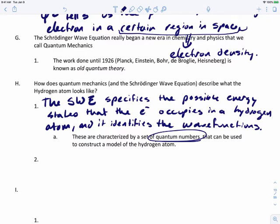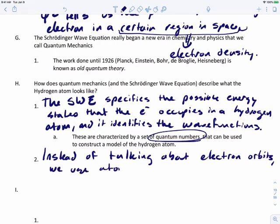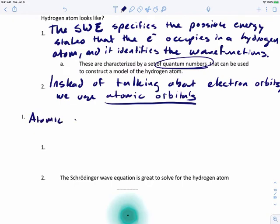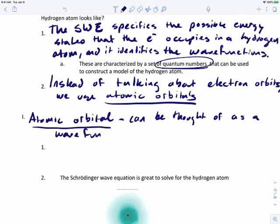We've been talking about electron orbits, the paths around the nucleus. We've got to switch. We can't be talking about those anymore. We need to talk about atomic orbitals. Instead of talking about electron orbits, we use atomic orbitals. An atomic orbital can be thought of as a wave function. Wave function is represented with ψ. It's a wave function of an electron in an atom.